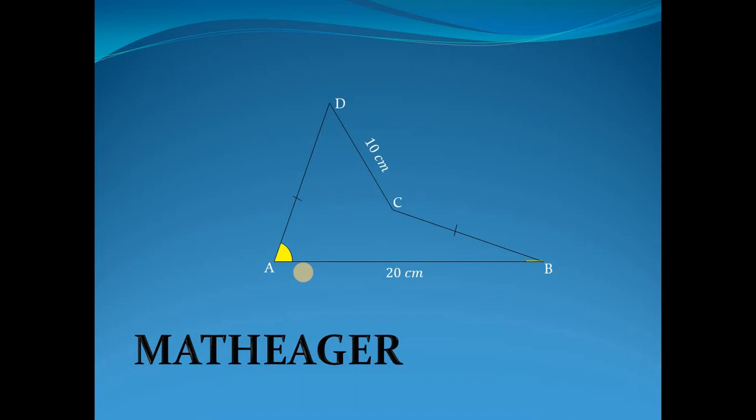If the sum of angle A and angle B is 90 degrees, then we have to find the area of this quadrilateral ABCD.